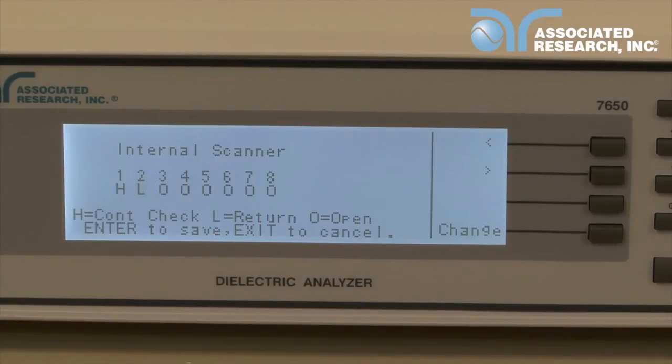If a scanner channel is set high, it will connect with high voltage for a high pot or insulation resistance test and to continuity check for a continuity test. If a channel is set low, it will connect to the return circuit. For this demonstration, we want to test continuity between pin 1 and pin 2 on the DUT, so we're going to set channel 1 high and channel 2 low.